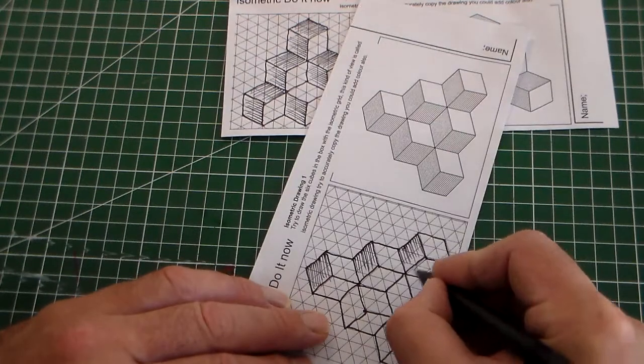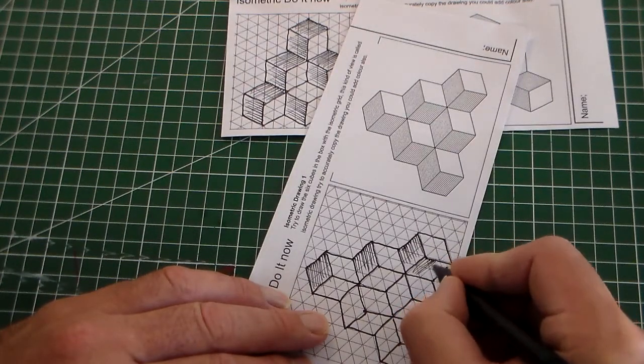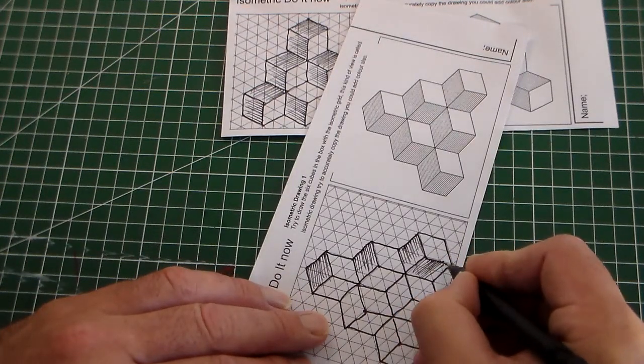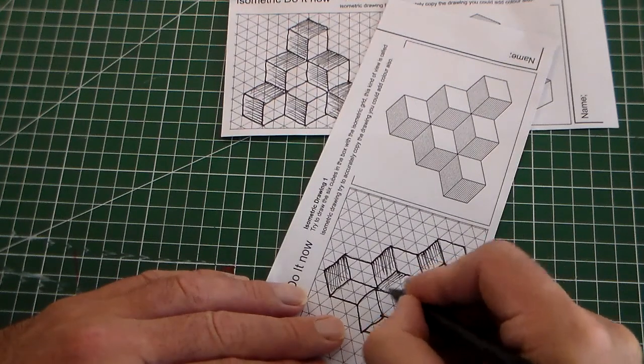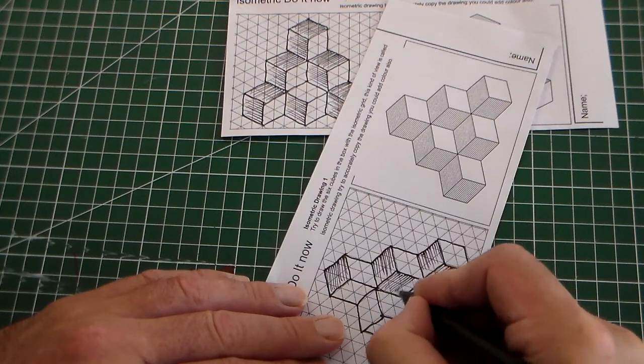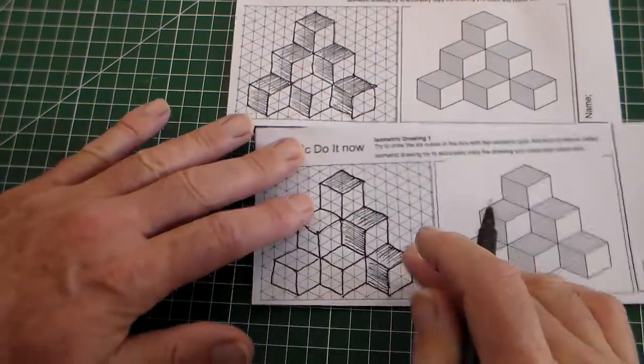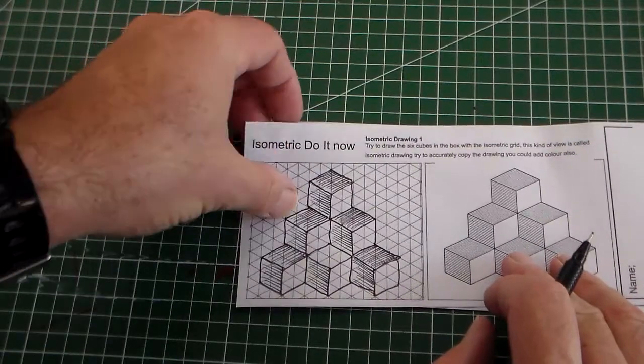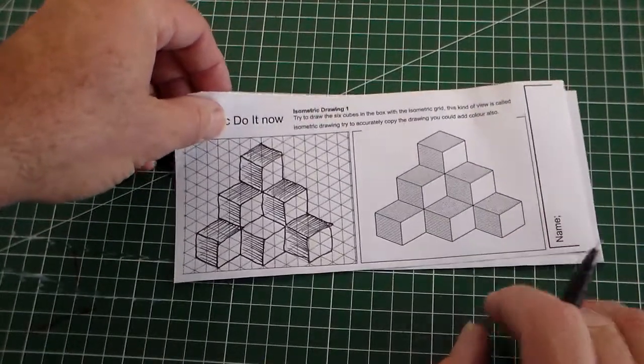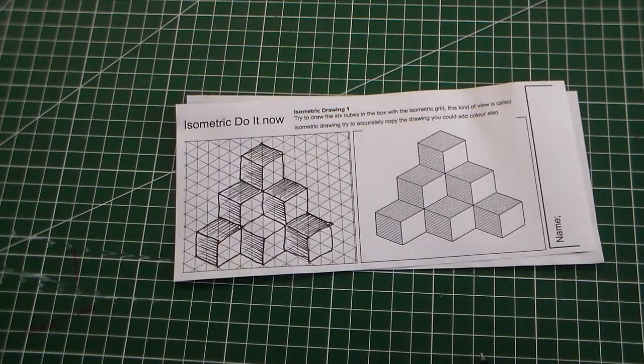And then for this other face, we're doing the hatching the other way. Okay, so there is the isometric drawing do-it-now task.